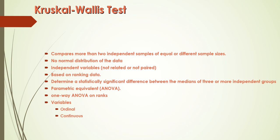The variables within the groups are independent and not related. The test is based on ranking data. It determines a statistically significant difference between the medians of three or more independent groups, so it is specifically designed for datasets with more than two groups. The test is the non-parametric equivalent of ANOVA — it is a one-way ANOVA on ranks.